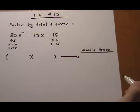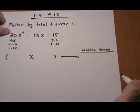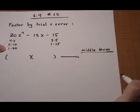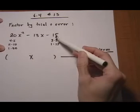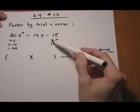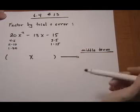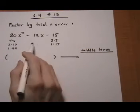Factors of 20: factors of 20 are 4 times 5, 2 times 10, or 1 times 20. And factors of 15 for the last term: 3 times 5 or 1 times 15, and they're going to have to add up to be a negative 13.